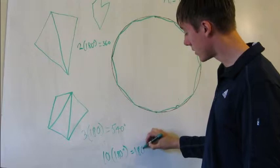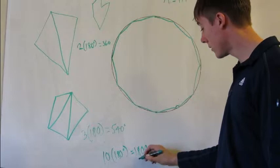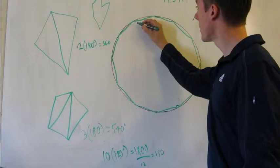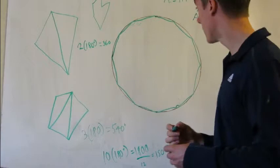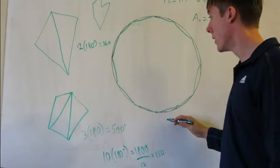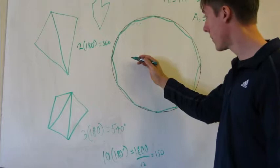Now that we know the total is 1,800 degrees, since all angles are the same, we take 1,800 divided by 12, and we get 150 degrees. So each of these angles is going to be 150 degrees. One thing to also mention is that this figure is very symmetrical — all angles are the same, all sides are the same — so if something is true for one angle, it's true for every single other one.